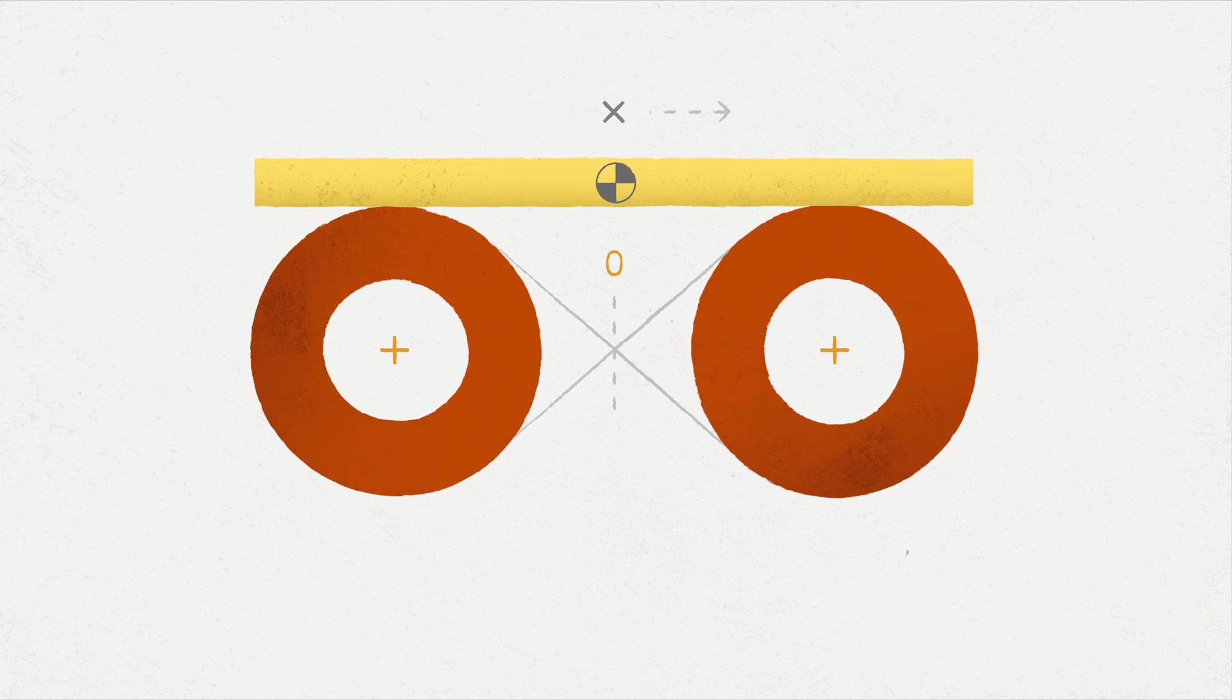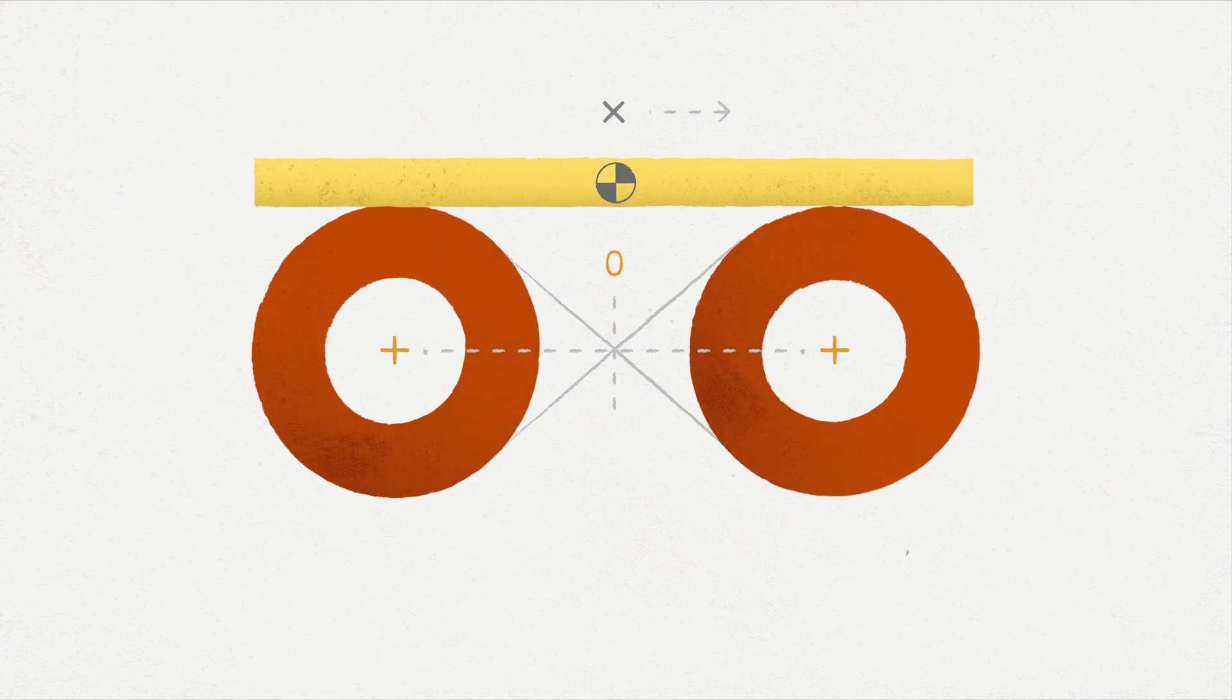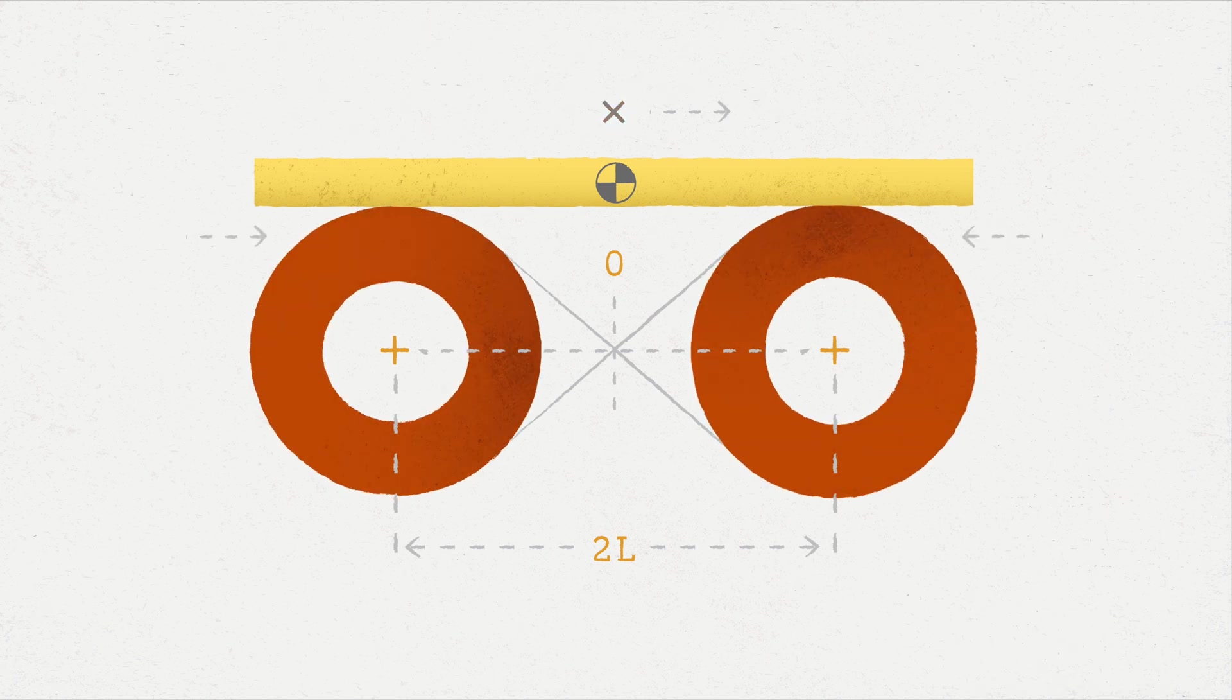And we are also going to have a coordinate system where the zero is right here in the middle between the wheels. So then we're also going to say that the distance from center to center of the wheels is 2L. And we have the mass of the bar, the coefficient of friction between the wheel and the bar, and that's the system.